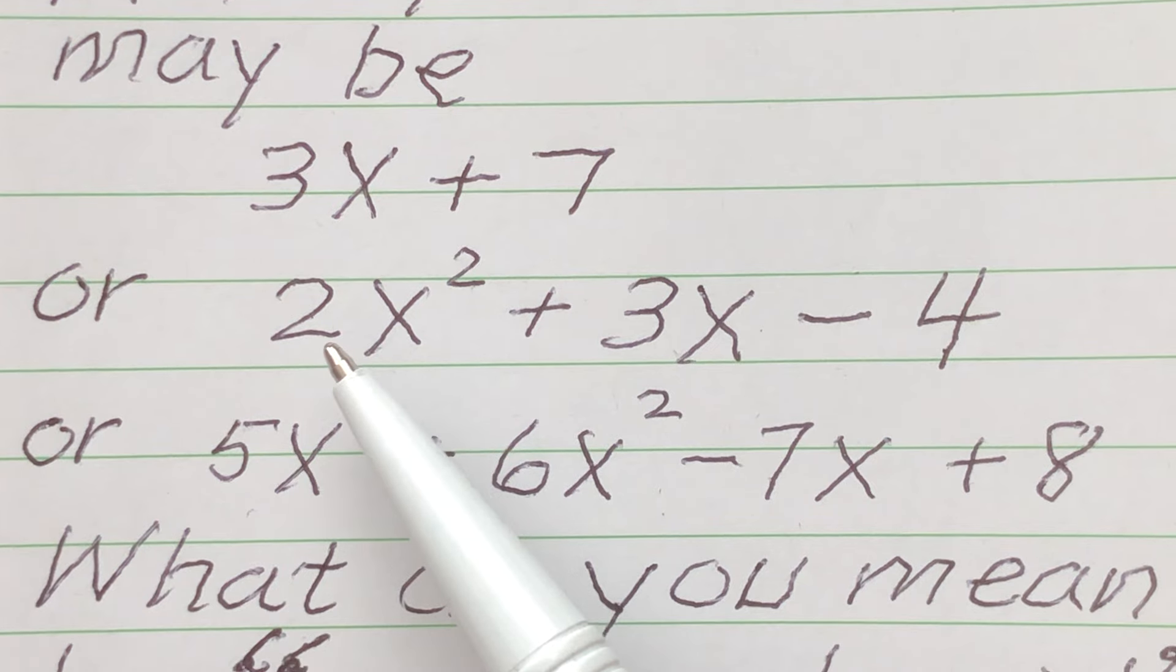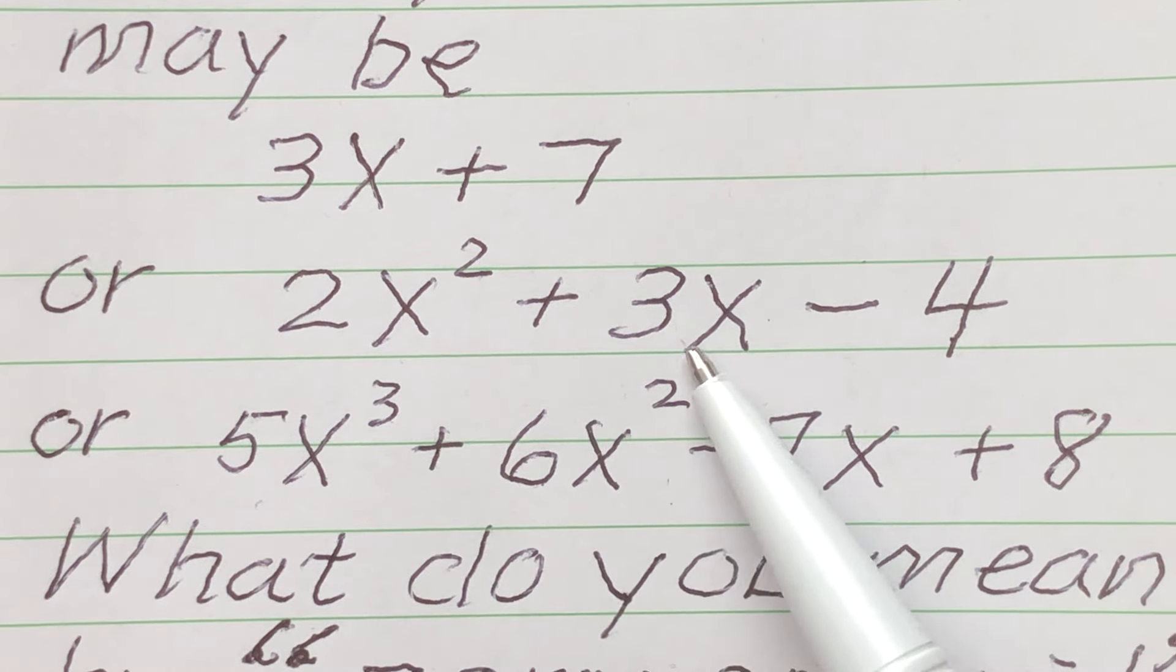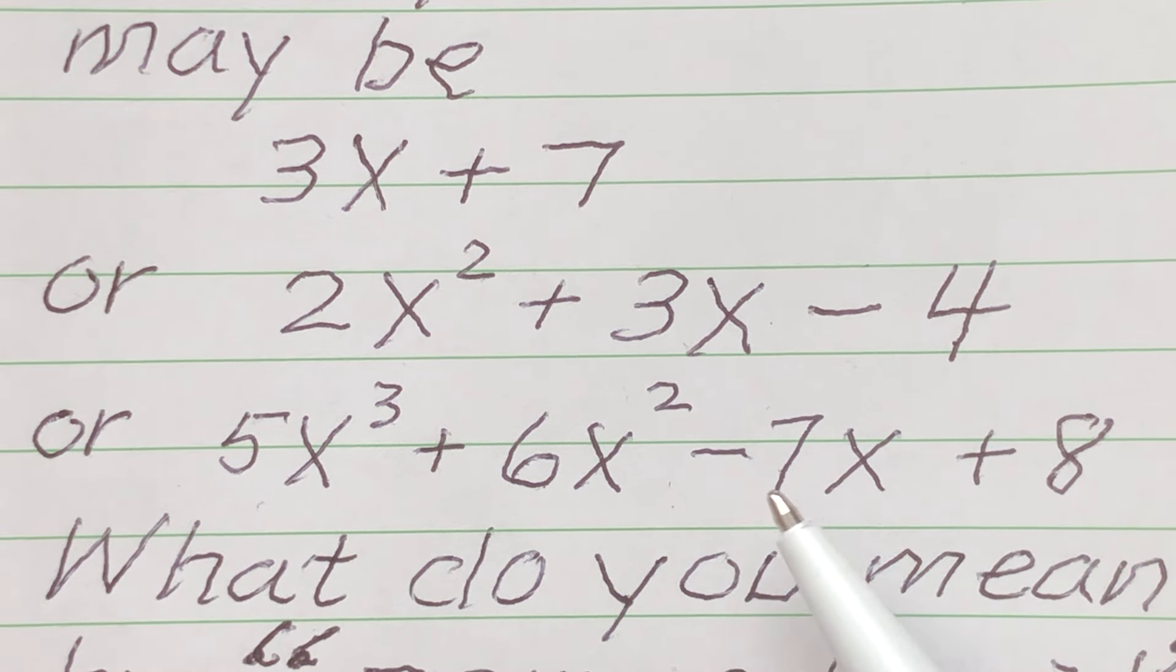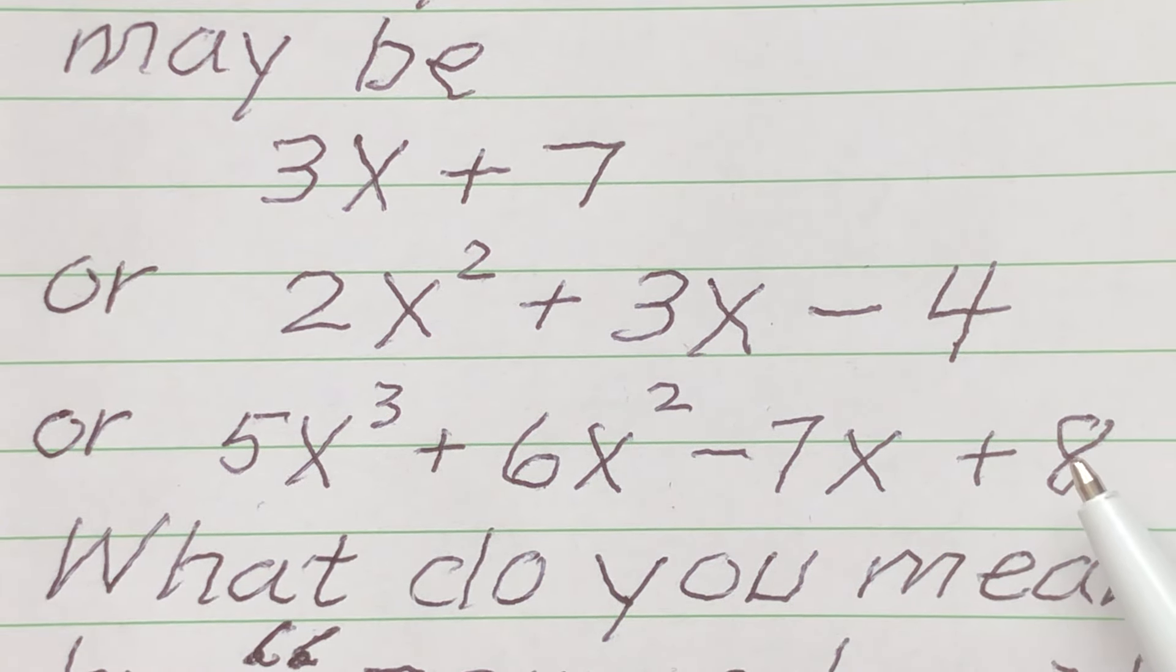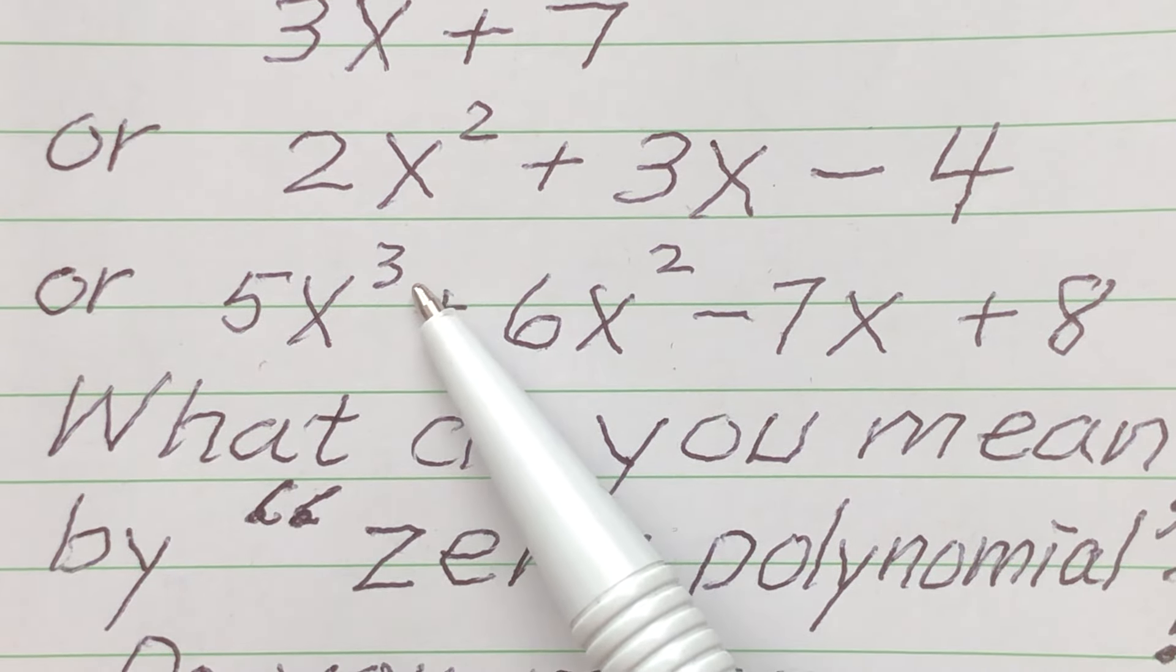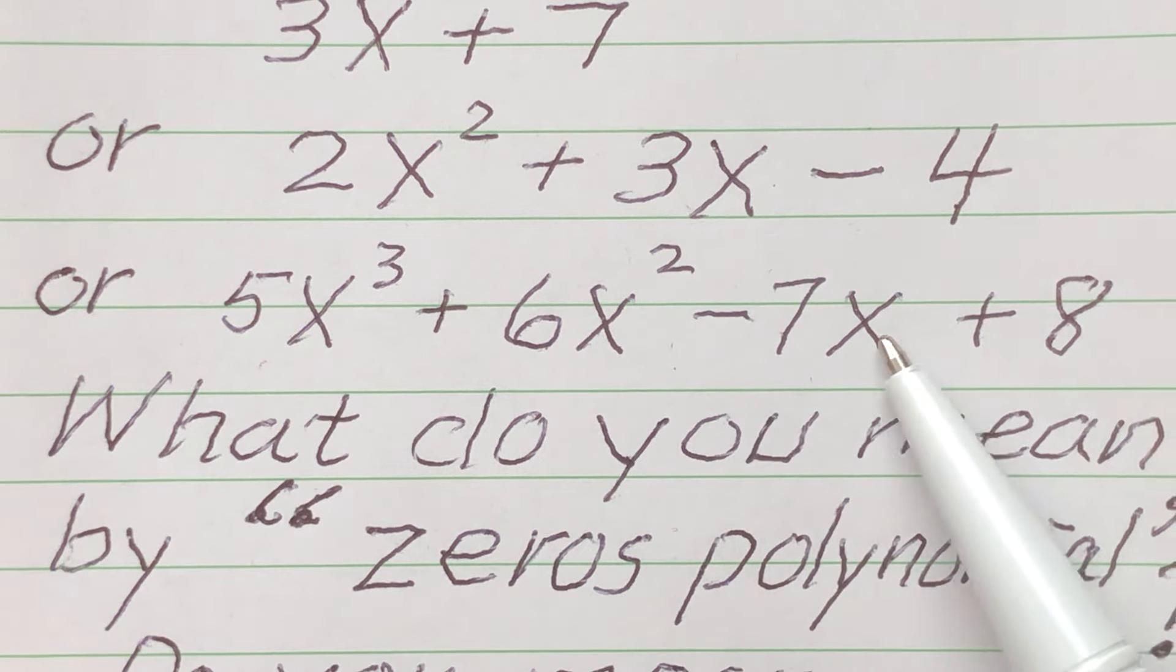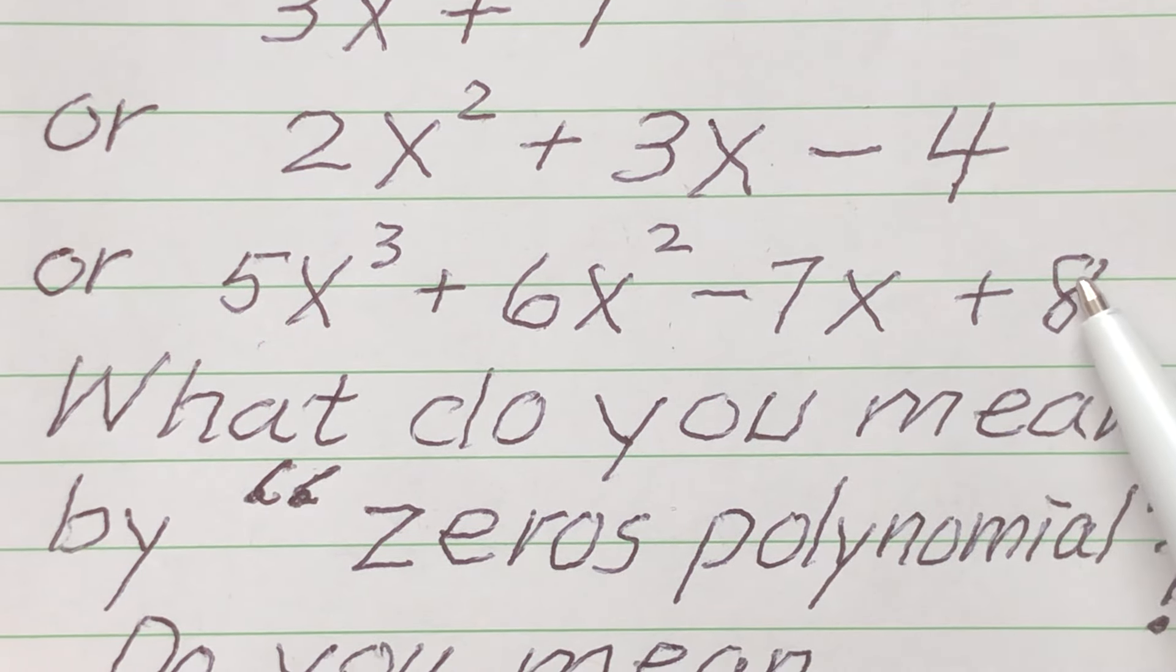Or, this is a polynomial: 2x squared plus 3x minus 4. Or, you can even make it a little bit more longer: 5x cubed plus 6x squared minus 7x plus 8.